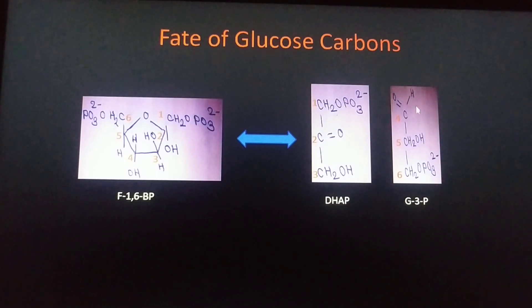The first position, that is the carbonyl carbon of glyceraldehyde-3-phosphate, is formed from the fourth position of original glucose carbon. This second carbon of glyceraldehyde-3-phosphate is formed from the fifth carbon of original glucose. Whereas this phosphate group which is present at the third position of glyceraldehyde-3-phosphate is present at the sixth position of carbon.